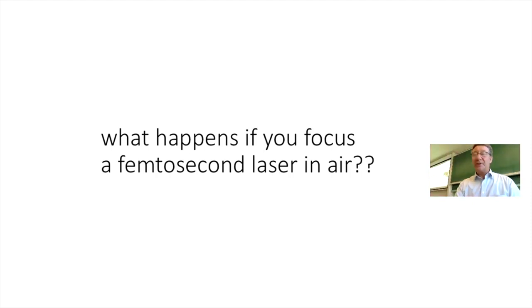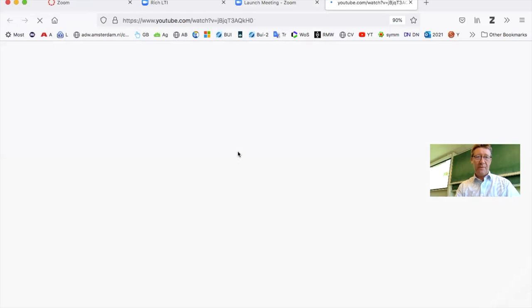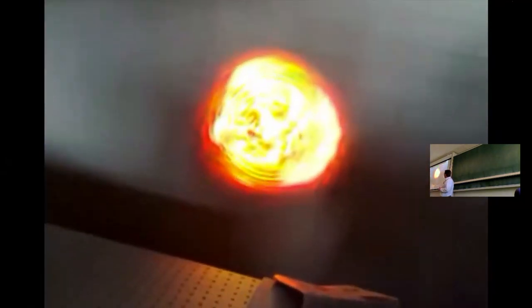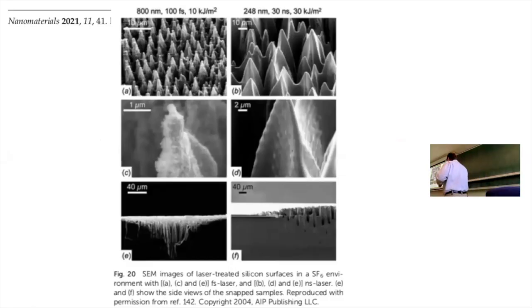What happens if you focus a laser? Here you see ionized air — it's a little bit like lightning. If you focus a femtosecond laser, you can ionize air and create a plasma. The little white ball you see is the plasma. The more you focus, the more extreme conditions you create.